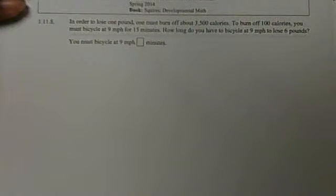I'm going to read the problem in case it's a little blurry. In order to lose one pound, one must burn off about 3,500 calories. To burn off 100 calories, you must bicycle at 9 miles per hour for 15 minutes. How long do you have to bicycle at 9 miles per hour to lose 6 pounds?